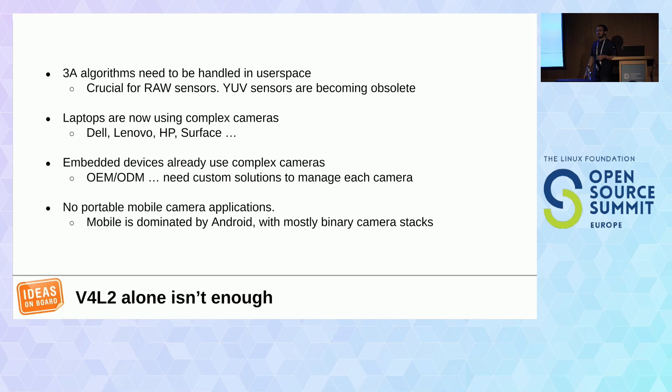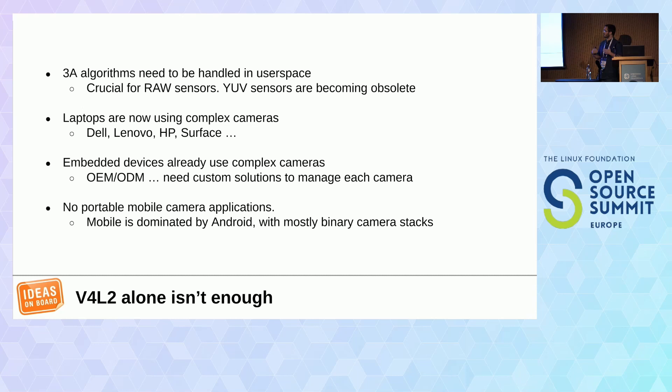V4L2 isn't enough on its own because the underlying sensors need to be configured for exposures and gains, requiring control loops. We capture an image, run it through the ISP — the ISP gives us statistics about whether it's too bright or too dark — and we use that to make adjustments to the camera. That feedback loop is not appropriate to handle in the kernel, so it's expected to be done in user space.